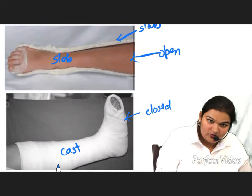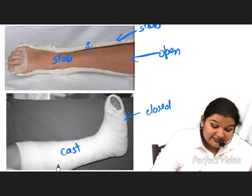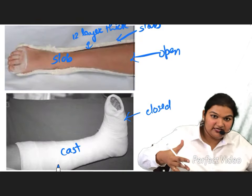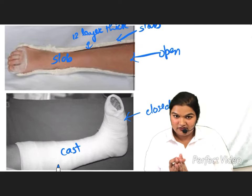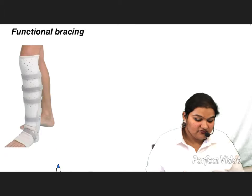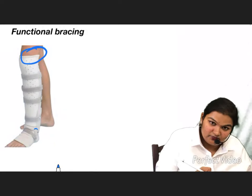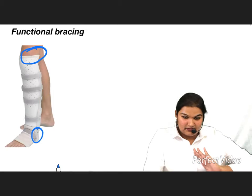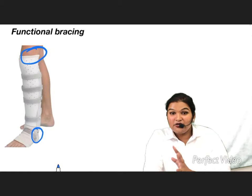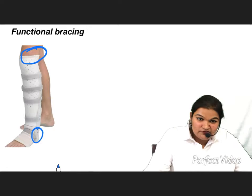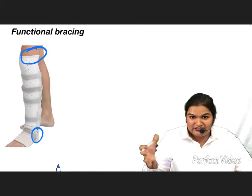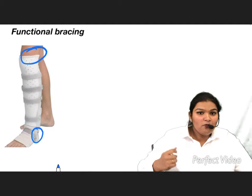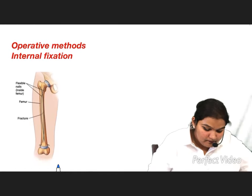Functional bracing is another cast type where the knee and ankle joints remain movable. This cast helps prevent stiffening of the joints of the affected limb. Since muscle injury already causes some joint stiffening, allowing some mobilization through functional bracing reduces further stiffening.